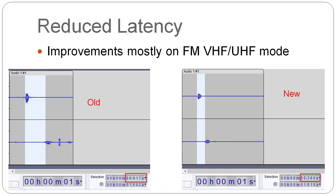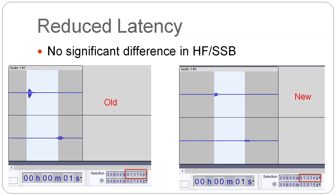The software redesign allowed latency to be reduced on the narrowband FM mode, as can be seen here. Latency is reduced by almost a third. However, the differences in the HF single-sideband modes aren't significant, because those are mostly due to the modulation and encoding schemes used by those modes.